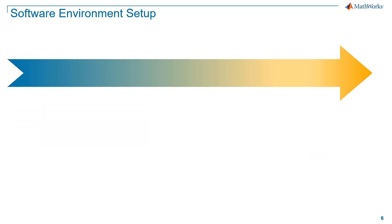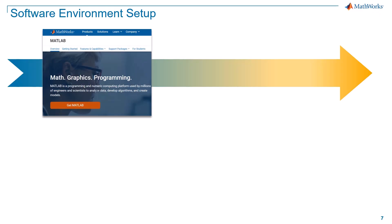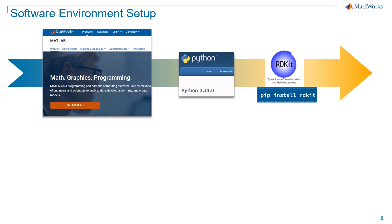Please watch our previous video for the details of setting up your software environment. This starts by getting a copy of MATLAB from mathworks.com. Once you have MATLAB, ensure your Python version is compatible by checking Mathworks website. I am using Python 3.11 for this example. Visit the Python website to download and install the appropriate version.